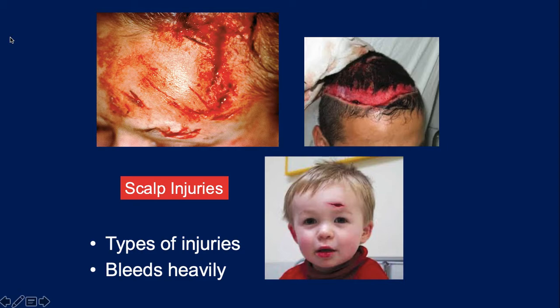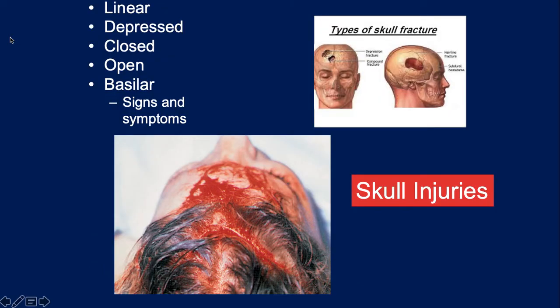The best way to determine severity is if they have an altered mental status — they're more than likely having some type of brain-related problem. If they fracture their skull, some are obvious: a big dent in their head. You might find a soft spot where the skull is fractured. For us, recognition and rapid transport is the most important thing. Don't start poking into the holes — who knows what you might be poking into.